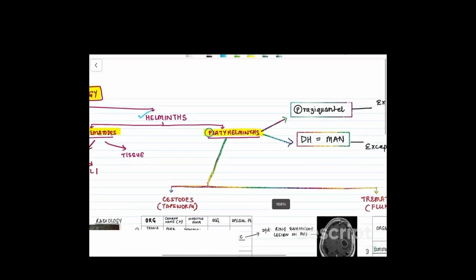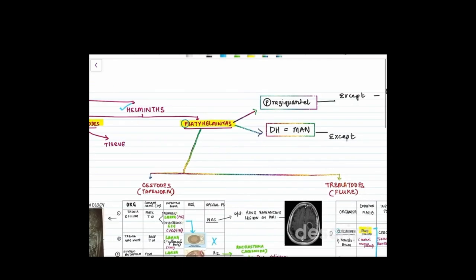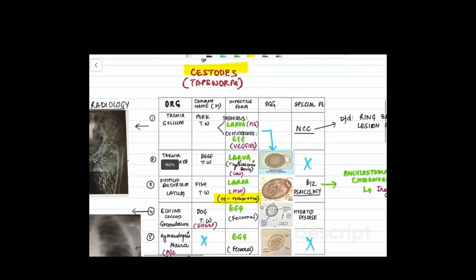In this video we will be talking about the second part of helminths, that is the platyhelminths. So platyhelminths are roughly divided into two: cestodes which are the tapeworms, and the trematodes. Beginning with cestodes first, the organisms present in cestodes are the tapeworms and we need to know the common name, the infective form, egg, and the special point regarding them.